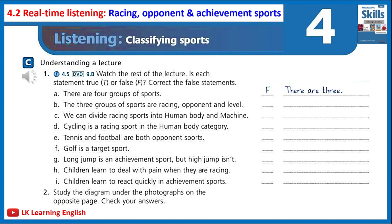I hope you have understood the classification. But why do we classify sports in this way in physical education training? Each type of sport teaches a child something different. Racing sports teach children to rely on themselves and to try harder, even if they are feeling physical pain. Opponent sports teach children to react more quickly and to think about the actions of another person. Achievement sports teach children to reach for a target — something which is hard to achieve, but achievable. Next week we're going to look at ball games in detail.